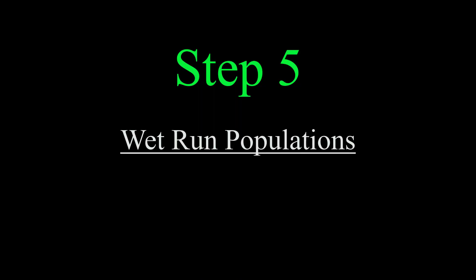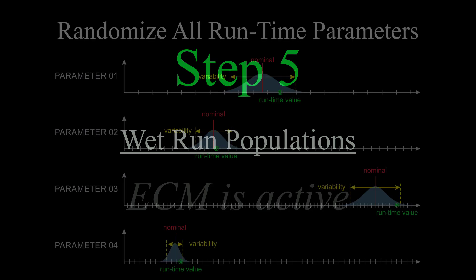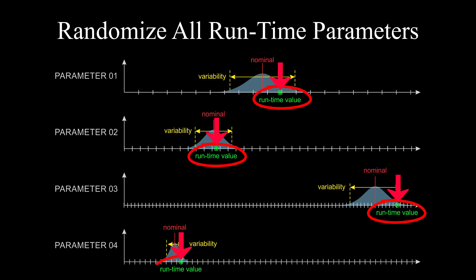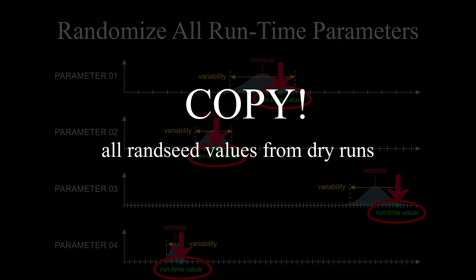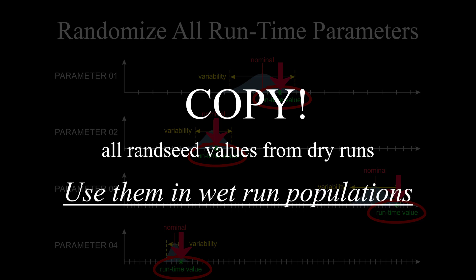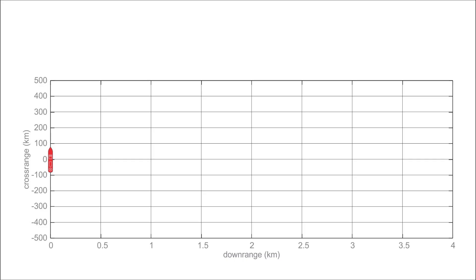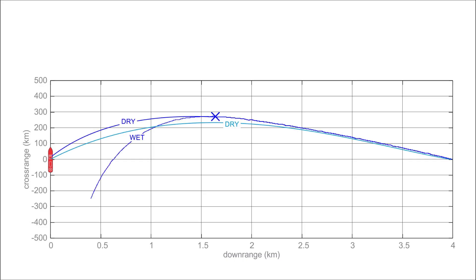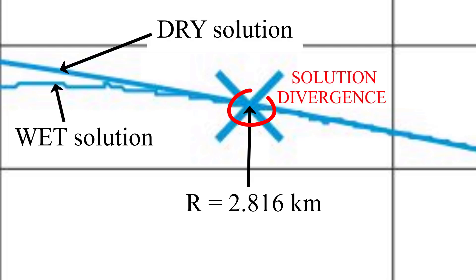We generate populations like the first one, but this time the jamming is switched on. In each run, all the parameters are randomized. Here's a key point: copy all the random number seeds from the dry run population and use them in the corresponding runs in the wet run populations. This way, the corresponding runs in the two populations — dry and wet — are identical except for jamming. The reason for doing this is so that forensic troubleshooting can be done if something looks fishy in any of the populations — it's the only way to find out if there is or isn't a problem.